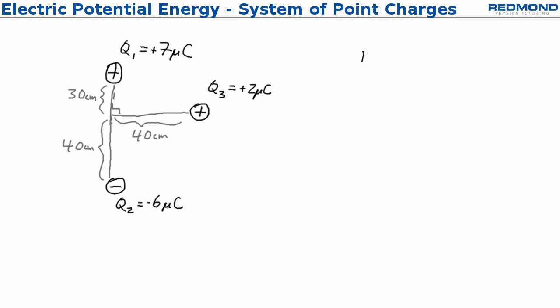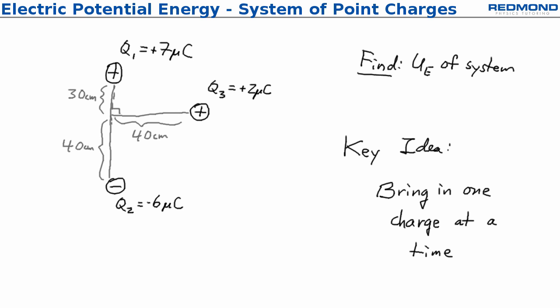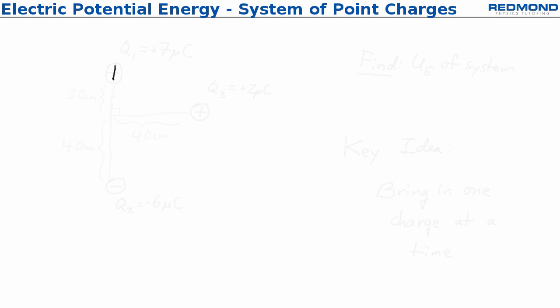The goal here is to find the electric potential energy of the given system with three different point charges. The key idea is to bring in one charge at a time. When we put the first charge q1 there, before that there's nothing there, there is no electric field, there's no potential function, so the electric potential energy is actually zero for a single charge.